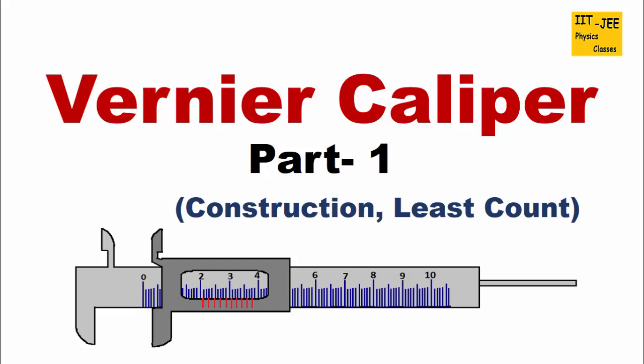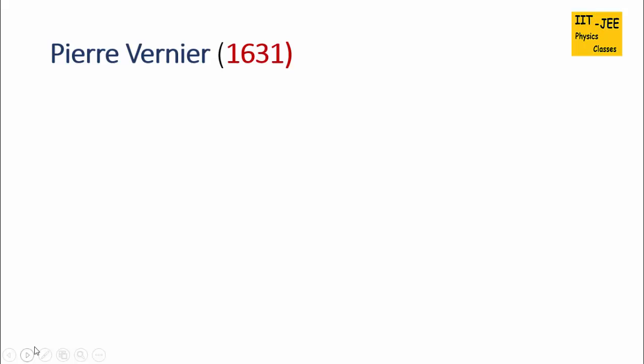French mathematician Pierre Vernier invented vernier caliper in 1631. This device can measure length, thickness, and diameter precisely or correctly. It can measure length correct up to 0.01 cm or 0.1 mm. That means, the least count of vernier calipers is 0.1 mm or 0.01 cm.